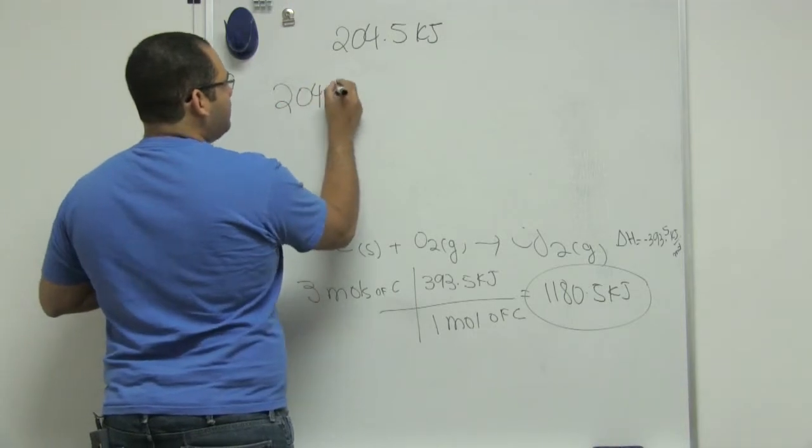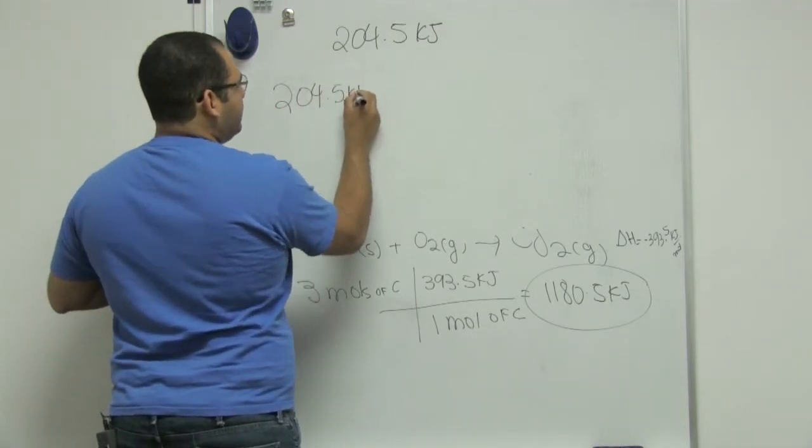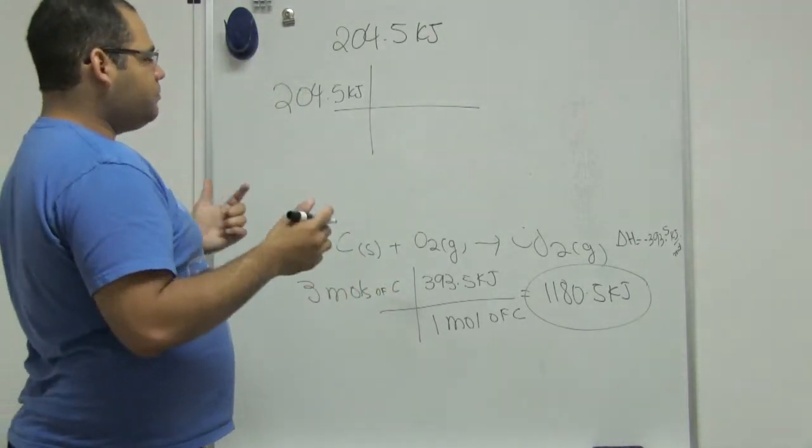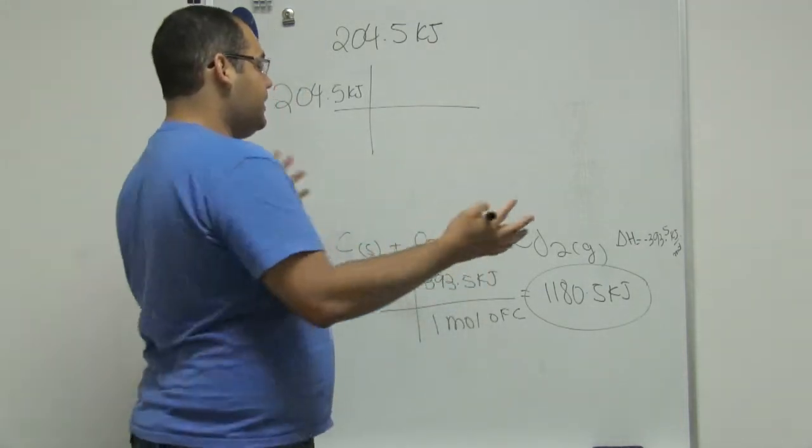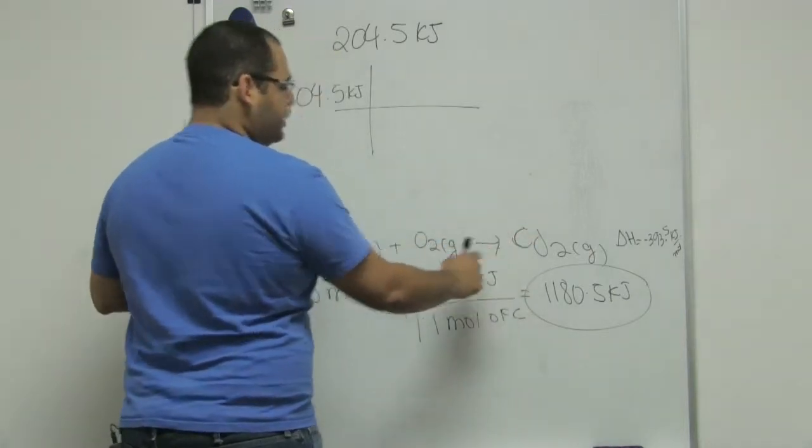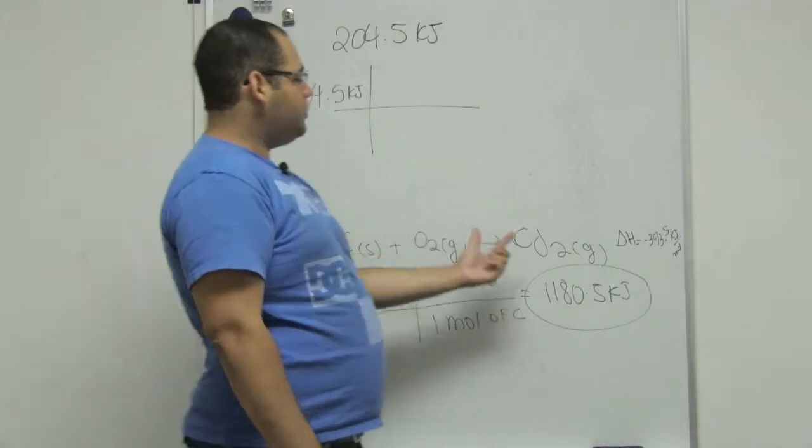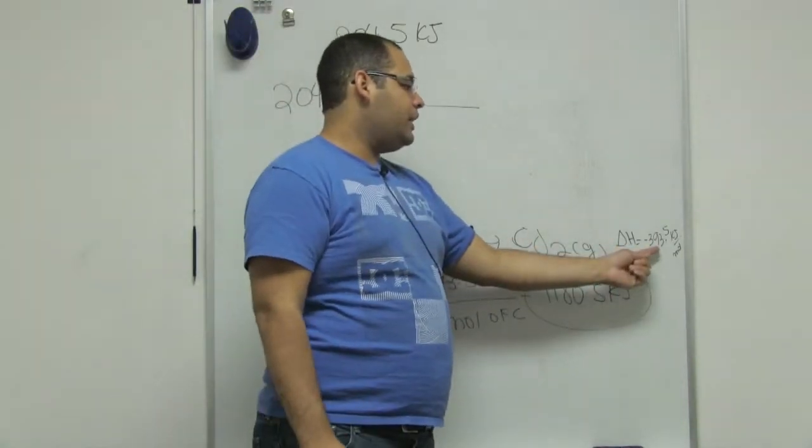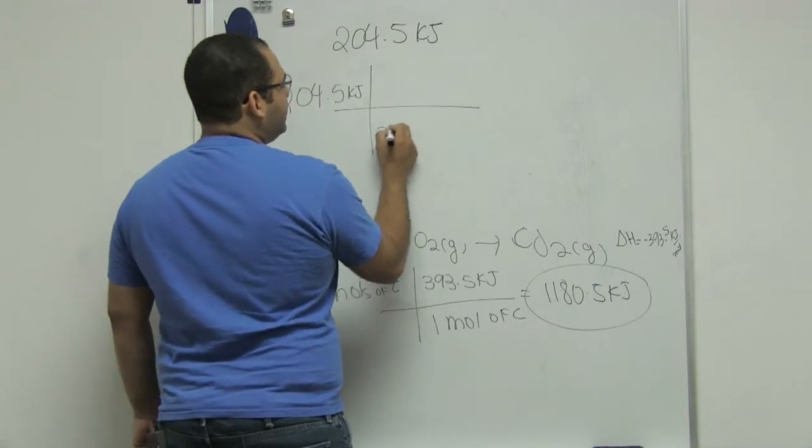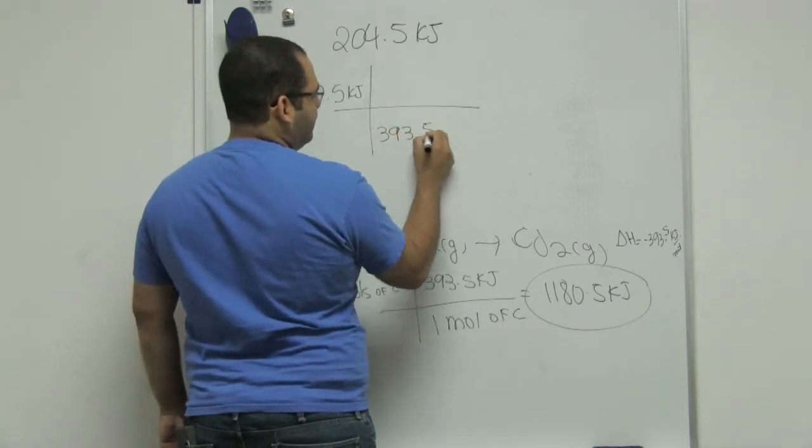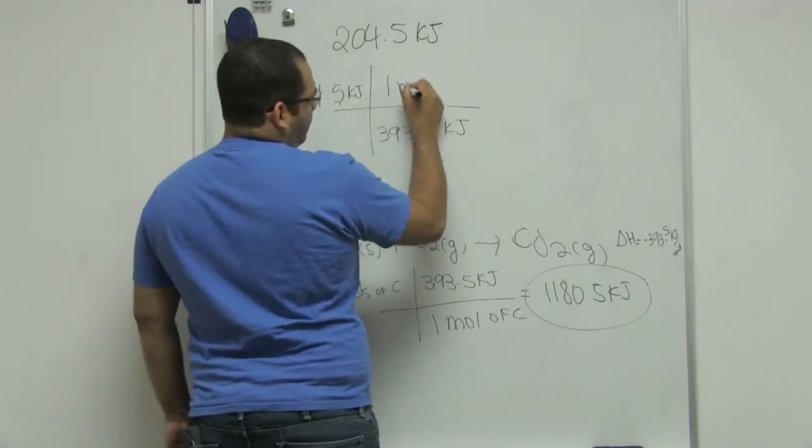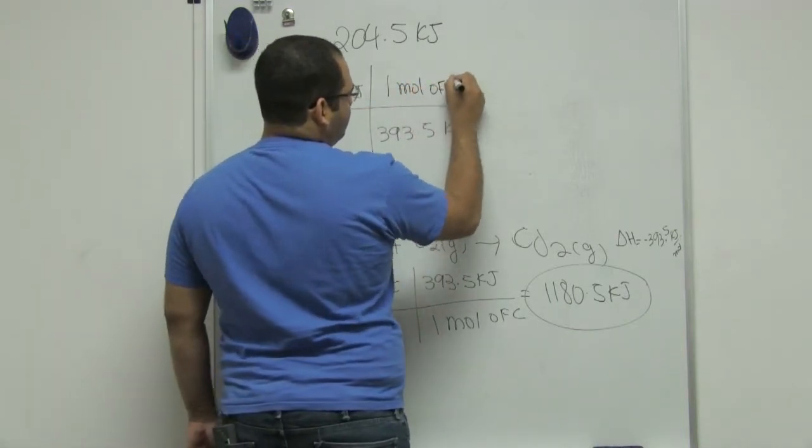So I would say 204.5 kilojoules and then I look in my reaction. For every one mole of CO2 I have 393.5 kilojoules being released. So I want 393.5 kilojoules in the bottom because they can cancel out for every one mole of CO2.